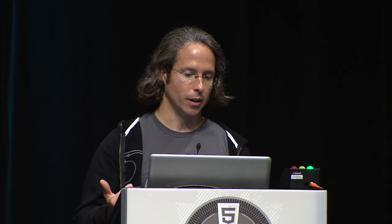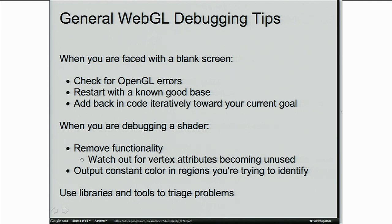When faced with a blank screen, don't panic. First, check for OpenGL errors. Try to restart with a known good base — go back to a basic tutorial, get a spinning square working, then figure out why your more complex version isn't showing up. In one case, the issue was forgetting to enable vertex attribute arrays. Once you have something on the screen, add code back in iteratively toward your current goal. There are also much more advanced tools that can help you debug your applications.